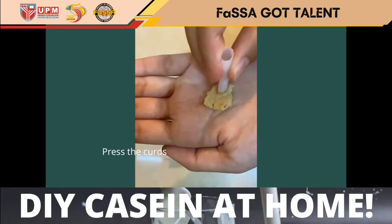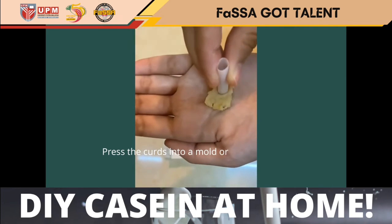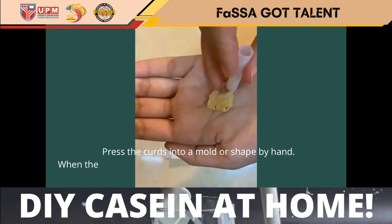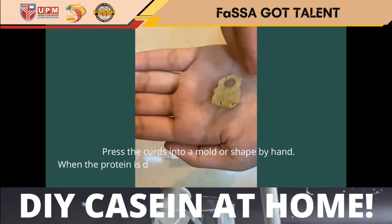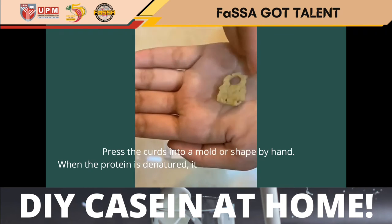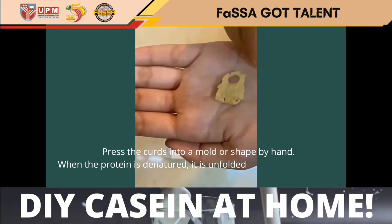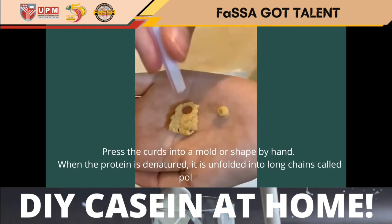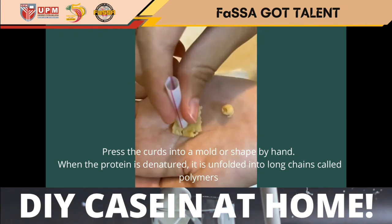Press the curds into a mold or shape by hand. When the protein is denatured, it is unfolded into long chains called polymers.